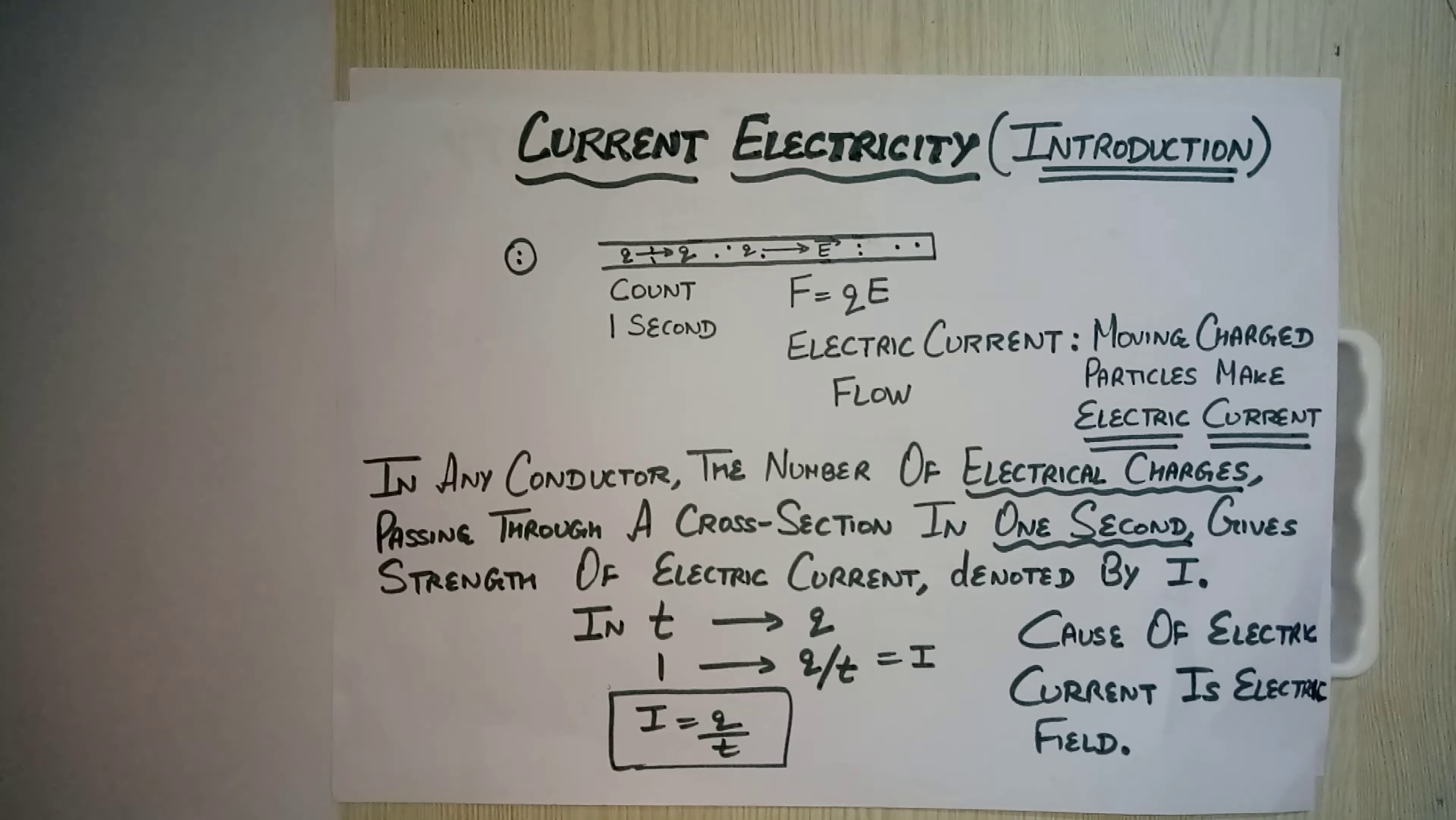But first, when the charges move, then we have to discuss, we have to fix up many quantities which are related to motion of the charges. Like if one charge is moving, if two charges are moving, or if five charges are moving - how we will differentiate?